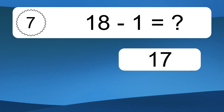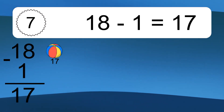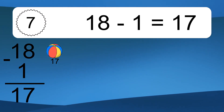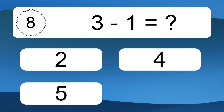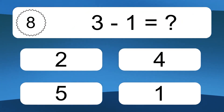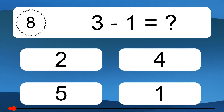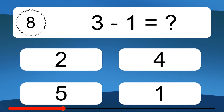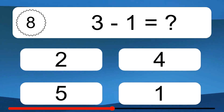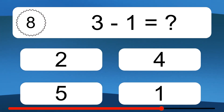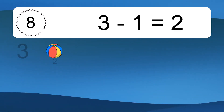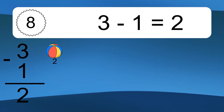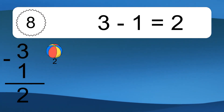18 minus 1 equals 17. Let's count it: 17. 3 minus 1 equals what? 3 minus 1 equals 2. Let's count it.